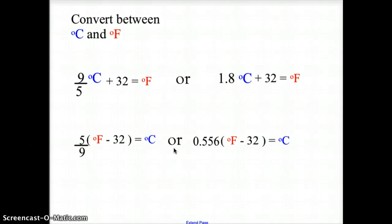To change from Fahrenheit to Celsius, we take the Fahrenheit temperature and subtract 32. We then multiply by 5/9, which is the same as multiplying by 0.556. So Fahrenheit minus 32 times 0.556 will give you the degrees Celsius.